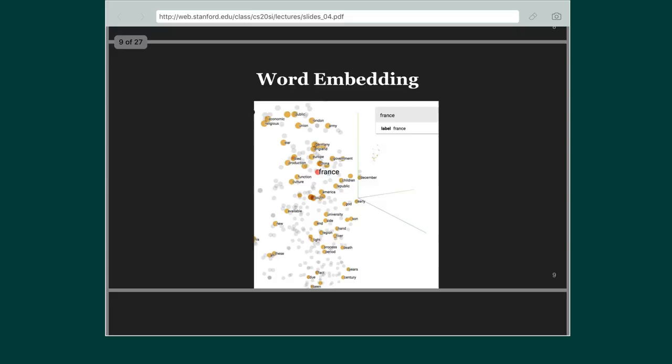Once we learn these embeddings and take a two-dimensional projection of words such as France, Europe, China, or America — all countries — intuitively these vectors should be representative of those concepts and clustered together. That's exactly what we see once we learn word embeddings and project them into two dimensions using a technique such as PCA.